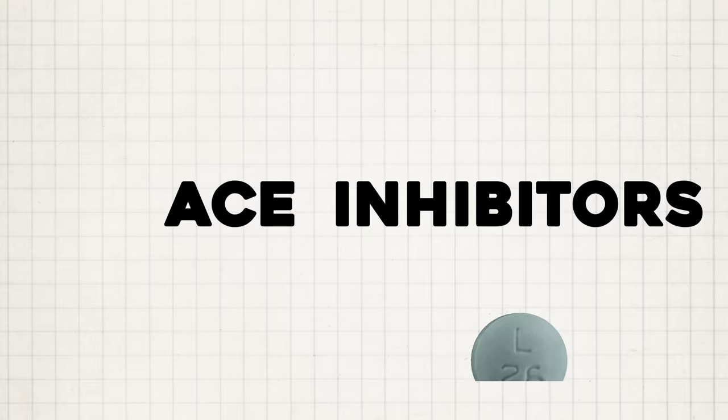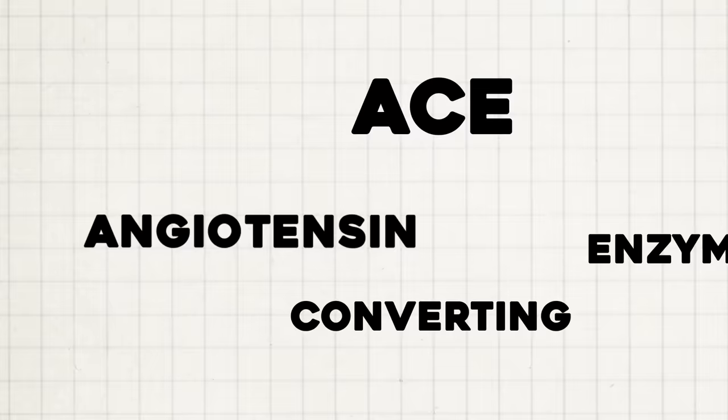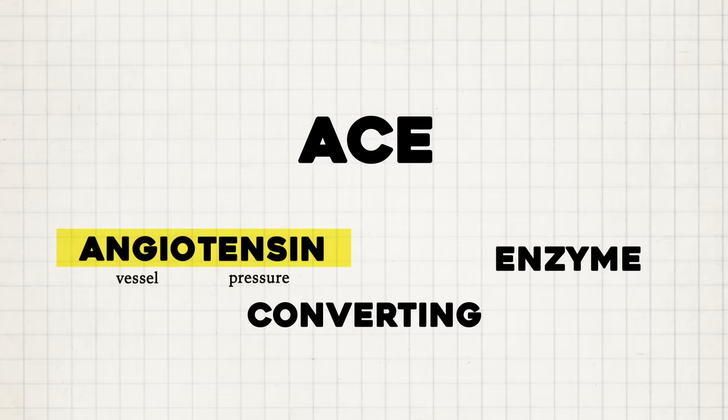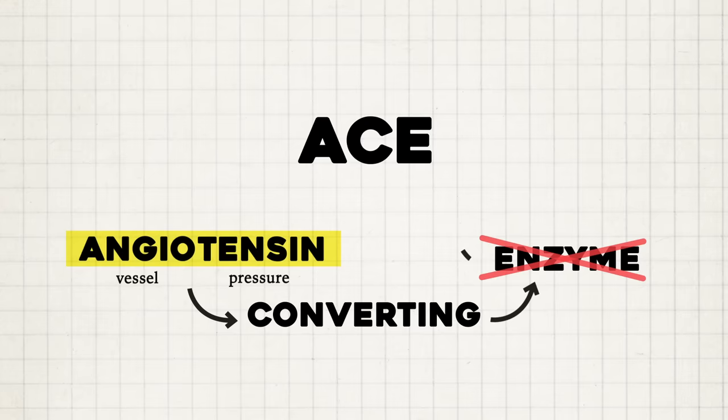ACE inhibitors like Benazepril or Lisinopril are common blood pressure medications. ACE stands for angiotensin converting enzyme. Angio for vessel, tensin for tension or pressure. So when angiotensin is converted via this enzyme, it tightens up blood vessels. By inhibiting this enzyme, you're encouraging the blood vessels to dilate and lower blood pressure, and that's what these drugs do.